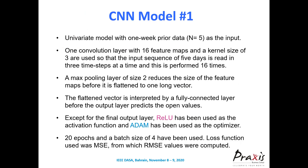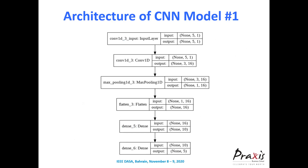CNN1 is a univariate model with one week of prior data. One convolution layer with 16 feature maps and a kernel size of 3 is used, keeping feature extraction simple. A max pooling layer of size 2 reduces the extracted features. The flattened vector is interpreted by a fully connected layer and then passed to a dense output layer. Sigmoid activation is used in the output layer; ReLU is used in other layers. Adam is the optimizer, with 20 epochs and a batch size of 4. The loss function is MAE.